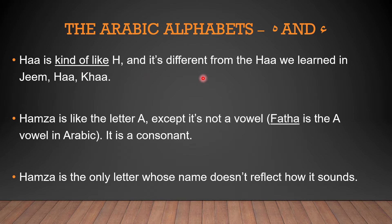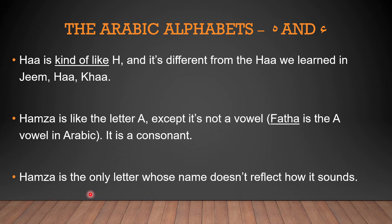Ha is kind of like H but it's different from the Ha that we learned in Jim-Ha-Kha. This is Ha and this is Ha, and as you can see even the way we write it is different. Hamza is like the letter A except that it's not a vowel — Fatah is the A vowel in Arabic. Hamza is a consonant; it just has a sound like the letter A. Hamza is the only letter whose name doesn't reflect how it sounds — there's no indication from its name that it sounds like A.